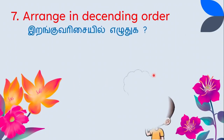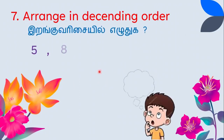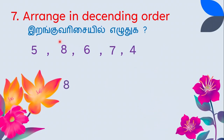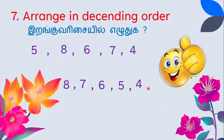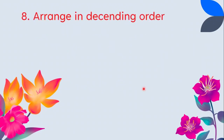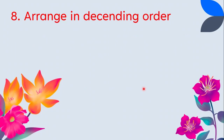Next descending order example: the numbers are arranged big to small. What is the big number? Big number is 8, next is 7, next is 6, next is 5, and the smallest number is 4. Descending order: 8, 7, 6, 5, 4.